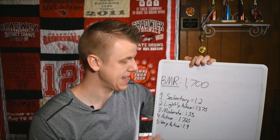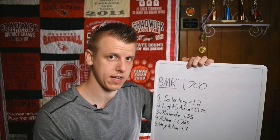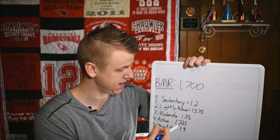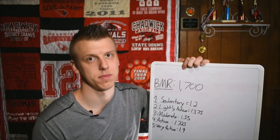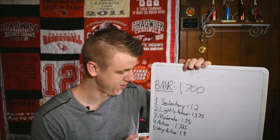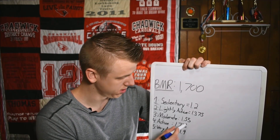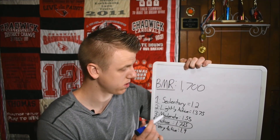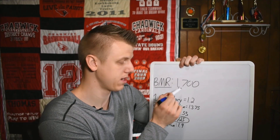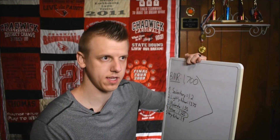Here are all the activity levels and how I get the numbers. Sedentary is probably zero to two workouts a week. Lightly active brings it up to two to three. Moderate is about three to four. Active is five to six workouts per week. Very active is about six to seven. It depends on where you're at — if you're a professional athlete, you'd be at the very active level, but that's pretty rare. For this example, we're going to use the active range.